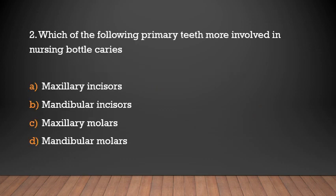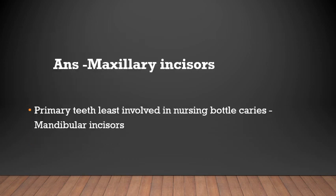Which of the following primary teeth is most involved in nursing bottle caries? Options: maxillary incisors, mandibular incisors, maxillary molars, mandibular molars. Answer: Maxillary incisors. The primary teeth least involved in nursing bottle caries are mandibular incisors.